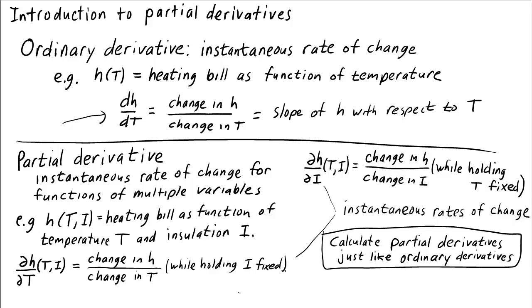But the nice thing about these is that we can calculate them exactly as we calculate ordinary derivatives. The key point is what we already wrote in the definitions: we need to hold the other variable fixed. So when calculating ∂h/∂T, we need to hold I fixed, which means we just treat I like a fixed number. In other words, we ignore it when we take the derivative.